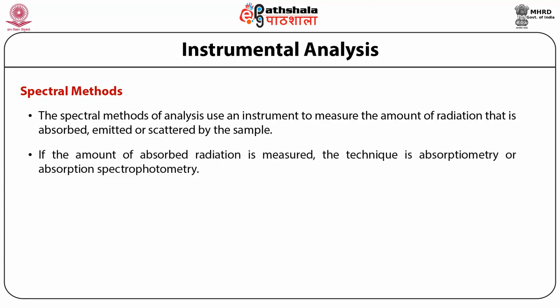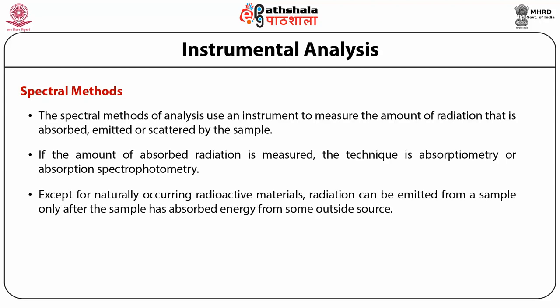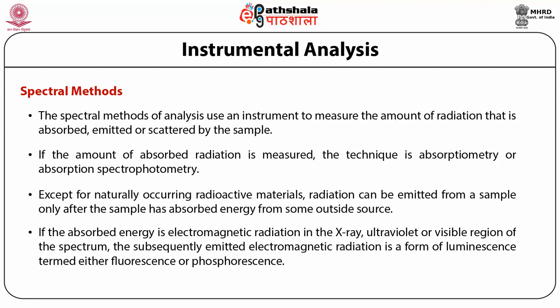The most widely used instrumental methods of analysis include spectroanalytical methods. The spectral methods of analysis use an instrument to measure the amount of radiation that is absorbed, emitted, or scattered by the sample. If the amount of absorbed radiation is measured, the technique is absorption spectrophotometry. Radiation can be emitted from a sample only after the sample has absorbed energy from some outside source. If the absorbed energy is electromagnetic radiation in the X-ray, ultraviolet, or visible region of the spectrum, the subsequently emitted radiation is a form of luminescence termed either fluorescence or phosphorescence, depending upon the manner in which de-excitation takes place.